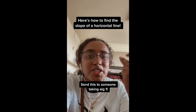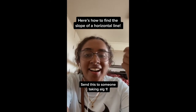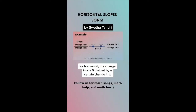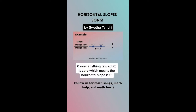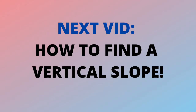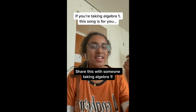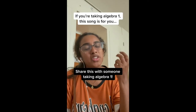Here's how to find the slope of a horizontal line. For horizontal lines, the change in y is zero, divided by a certain change in x. Zero over anything is zero, which means the horizontal slope is zero.